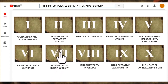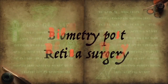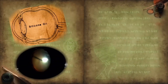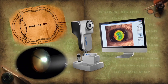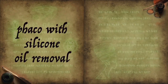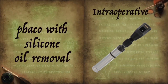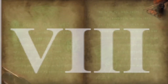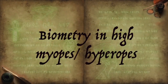The next scenario is biometry post-retina surgery. In situations like a silicone oil-filled eye or combined phaco-vitrectomy, consider using optical biometry with two-thirds of the axial length. However, in cases of phaco with silicone oil removal, intraoperative retinoscopy is a must.